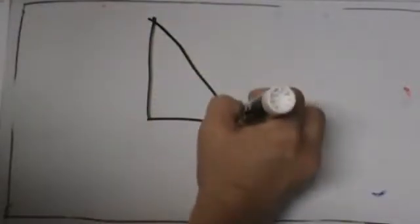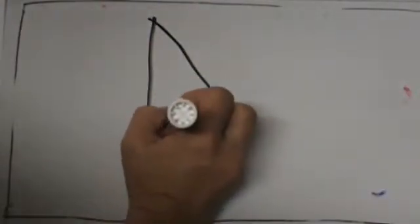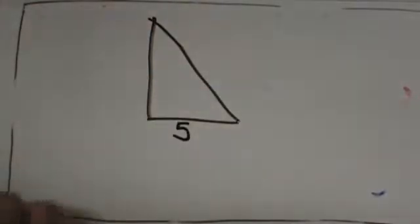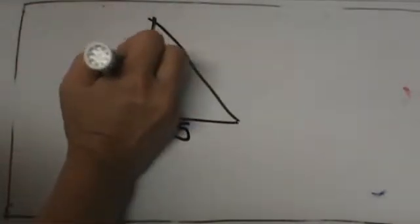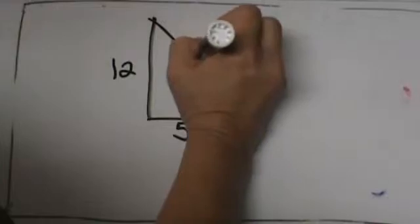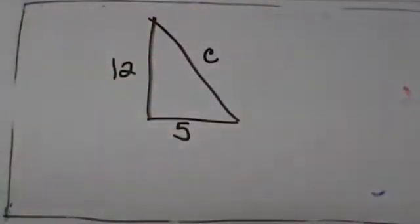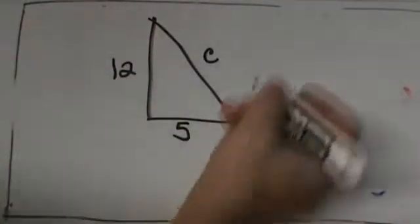We have A which is down here and it is 5, and B is 12, and we are trying to find C, so C is our unknown. This is a forward Pythagorean theorem problem.